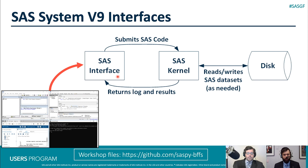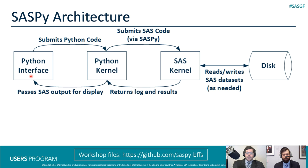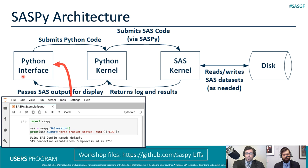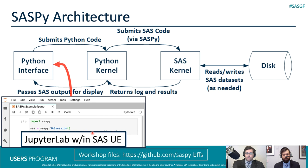What we're going to show you today is a way to use Python to interact with the SAS kernel rather than one of these SAS interfaces. In particular, we're going to start with a Python interface called JupyterLab. It is a way of using SAS University Edition, which is free software you can download and install. We have complete instructions for how to do that on our GitHub at github.com/saspy-BFFs — BFF standing for best friends forever, which is what we hope you'll believe SAS and Python can be after this tutorial.